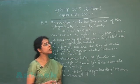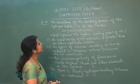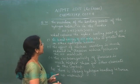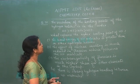Next question is question number 38. The variation of the boiling points of hydrogen halides is in the order HF, HI, HBr, HCl. What explains the higher boiling point of HF?